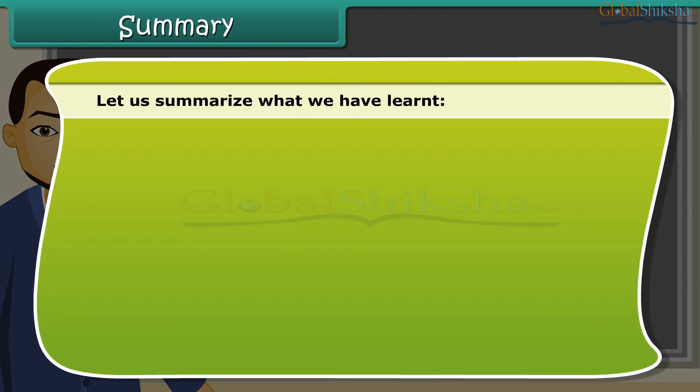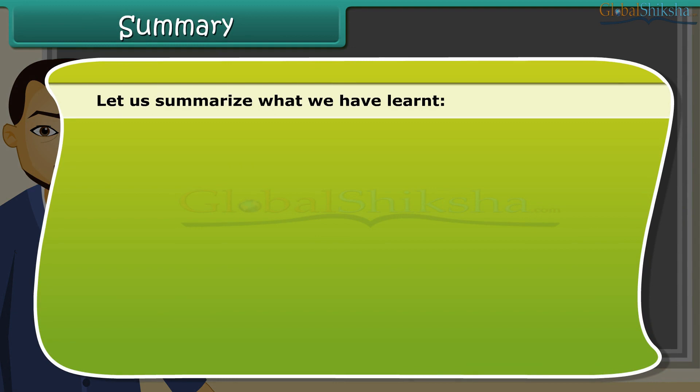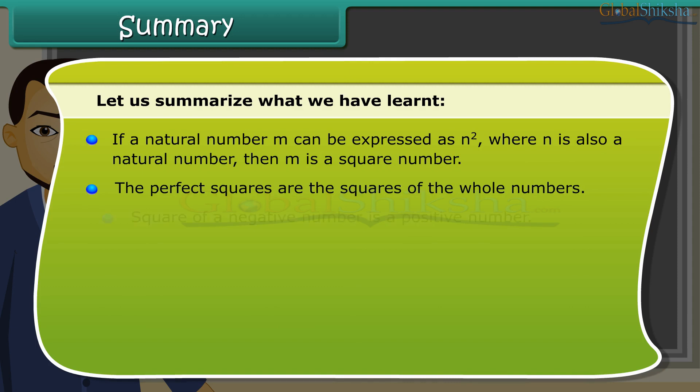Let us summarize what we have learned. If a natural number M can be expressed as N square, where N is also a natural number, then M is a square number. The perfect squares are the squares of the whole numbers. Square of a negative number is a positive number.